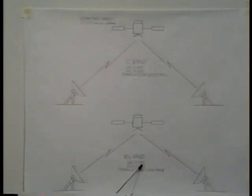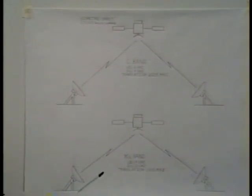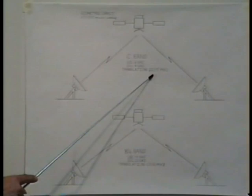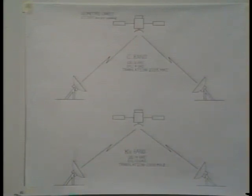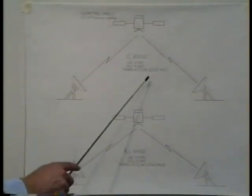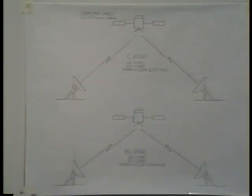KU band is uplinking on 14 gigahertz, and the satellite translates that down to 12 gigahertz. Most of you are familiar with translation. If we uplink at six, then the satellite translates that 2225 megahertz and brings it back down. So if you know your transmit frequency and you don't know your receive frequency, you can determine your receive frequency by subtracting 2225 megahertz.